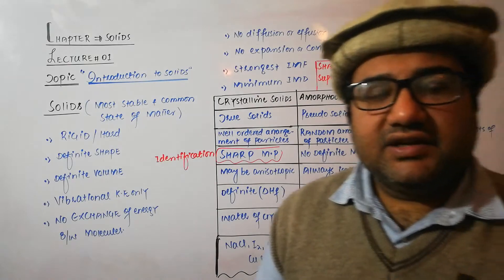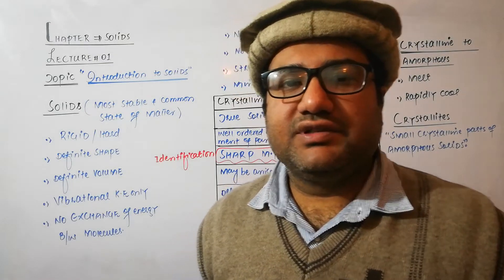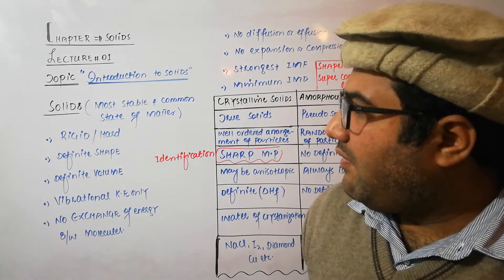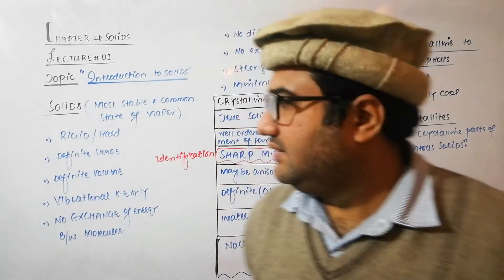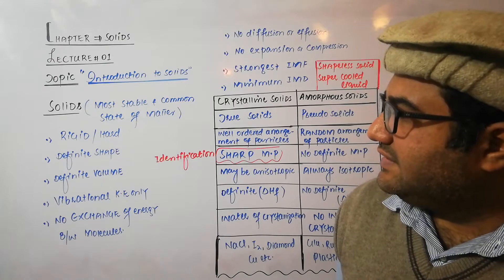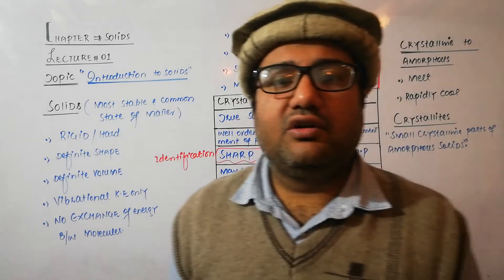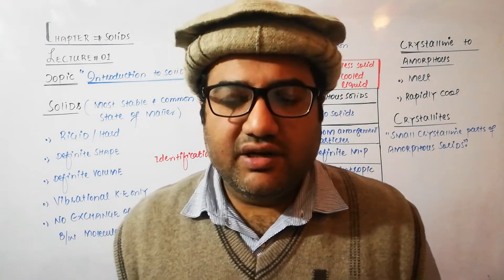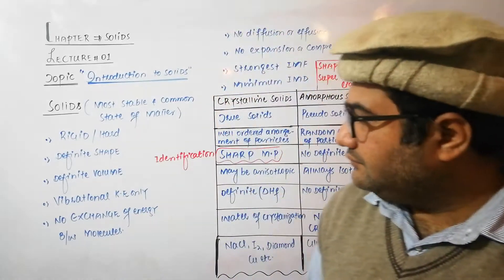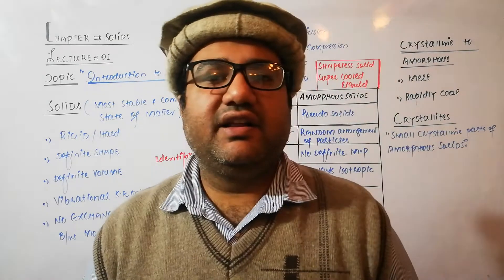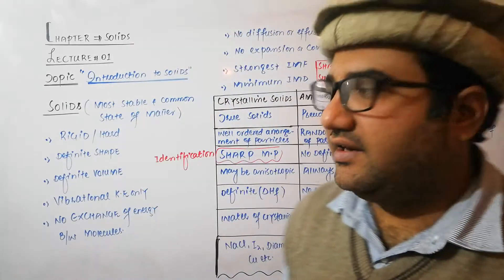What are the general properties of solids? First, they are rigid and hard because of very strong intermolecular forces between their molecules or particles. They have a definite shape — they do not attain the shape of the container but have their own shape. Because of the specific position of their particles, they have definite volume and do not occupy the complete volume of the container. There is no translational kinetic energy; solid molecules have only vibrational kinetic energy.